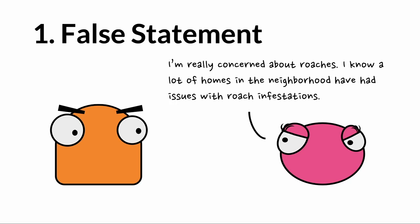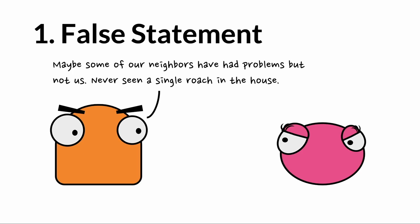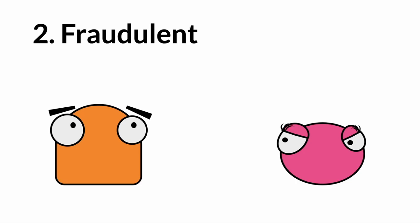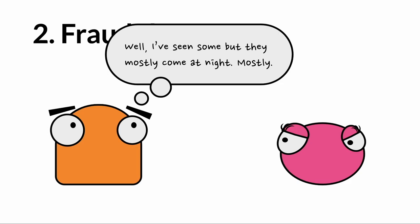In our first example, Bob and Barb — Barb is talking to Beau about the possible purchase of his home. She says she's really concerned about roaches, noting a lot of homes in the neighborhood have had infestations. Beau says, 'Maybe some neighbors have had problems, but not us — never seen a single roach in the house.' The actual fact is Beau's house is filled with roaches. He's thinking to himself, 'I've seen some, but they mostly come at night, mostly' — so he recognizes he knows there are roaches and has said the contrary.